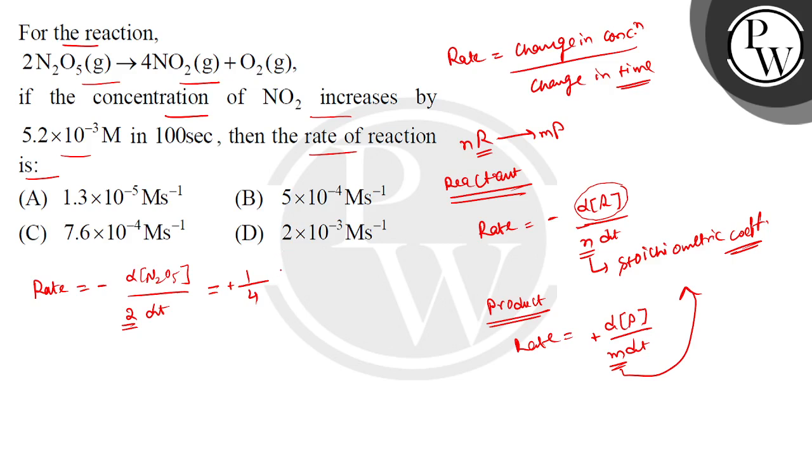The concentration of NO2 increases by 5.2 into 10 to the power minus 3, so this means change in concentration is 5.2 into 10 to the power minus 3, and the time is 100 seconds.